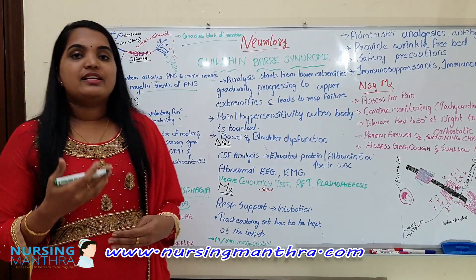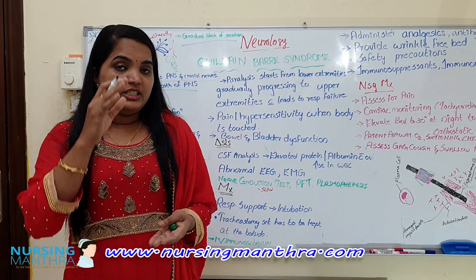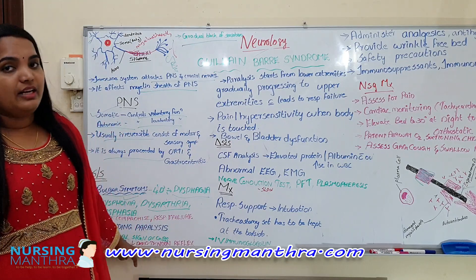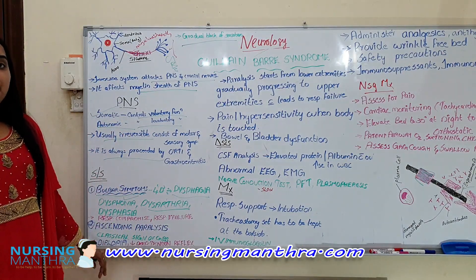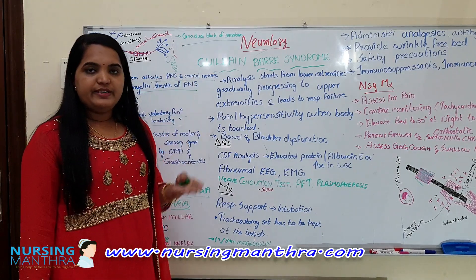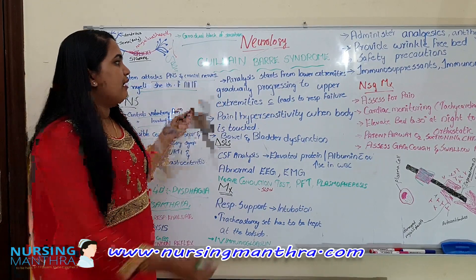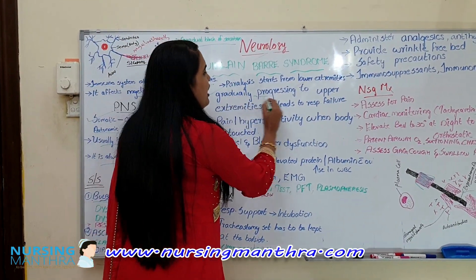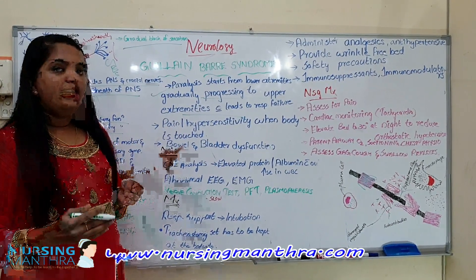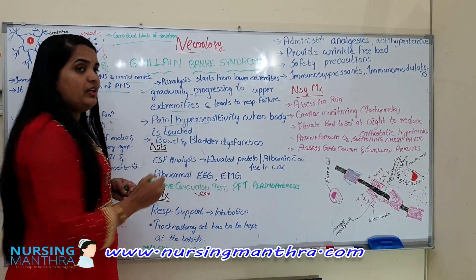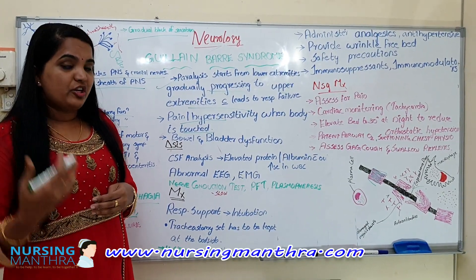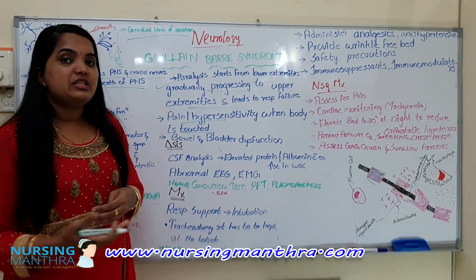On assessment, the deep tendon reflexes are decreased — you will see decreased deep tendon reflexes in this condition. There is also diplopia — double vision. Paralysis starts from the lower extremity, gradually progressing to the upper extremity, and finally leading to respiratory failure. Pain hypersensitivity is present — the patient will be more sensitive to pain or extreme temperatures.